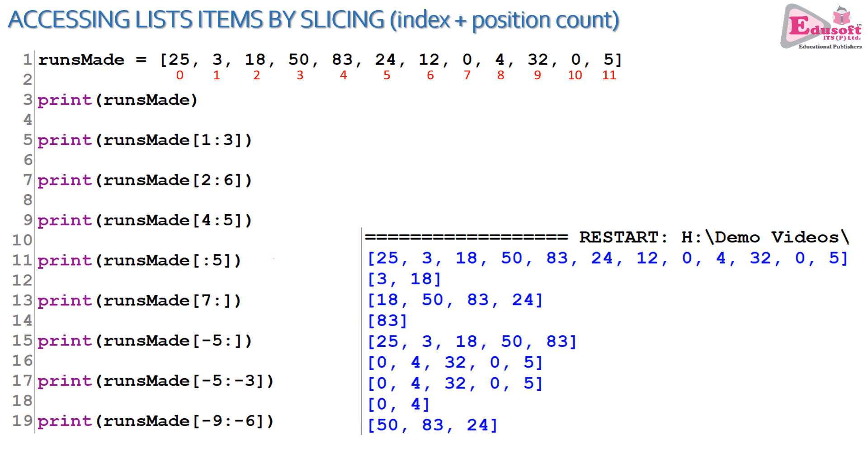If you are omitting the index, see line number 11. Blank colon 5 means 0 colon 5, starting from the beginning. 7 colon blank means till the end of the list. So from index 7, the entire list will be displayed starting from index 7.